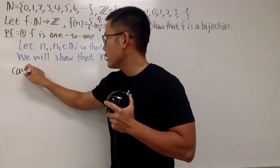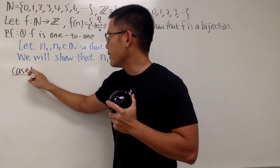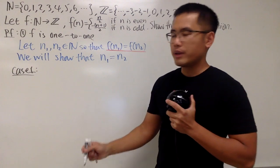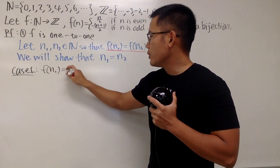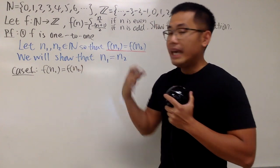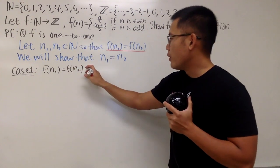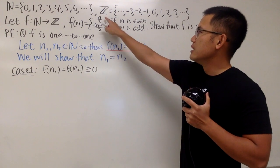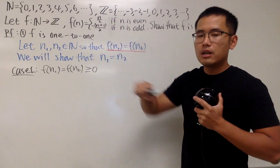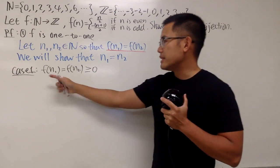Anyway, we actually have two cases to consider. Case 1, right? Case 1. Let's do the following. I will just say that f(n1), which is the same as f(n2), in fact, they are both non-negative, the non-negative situation. So we are looking at this part right here.